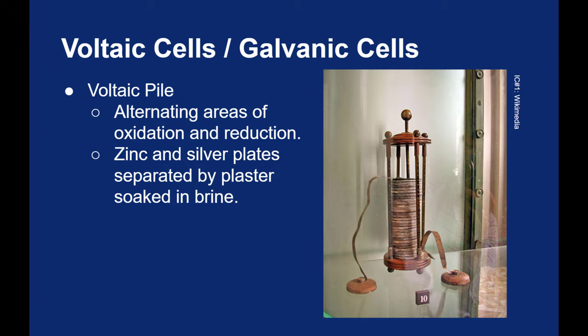The other thing that Volta came upon was he separated these disks of zinc and silver by having these little plaster wafers in between them. And he soaked those plaster wafers in brine, which is a saturated salt water solution. And I'll show you why that's important in a moment. Instead of looking at a more complicated voltaic cell like this, let's look at a simpler system where we just have one oxidation cell and one reduction cell.